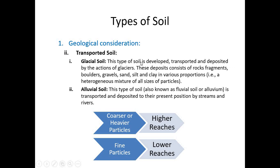Transported soil is classified into several types. Glacial soil is developed, transported, and deposited by the action of glaciers. These deposits consist of rock fragments, boulders, gravel, sand, silt, and clay in various proportions — it is a heterogeneous mixture of particles. Another type is alluvial soil. Alluvium is transported and deposited to its present position by streams and rivers. Coarser or heavier particles reach higher positions and finer particles settle at lower positions.